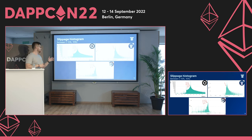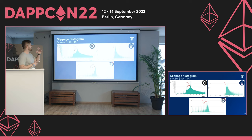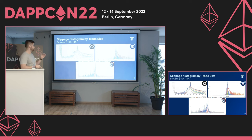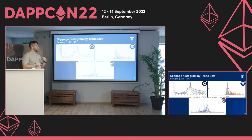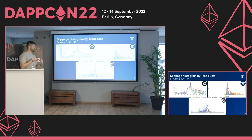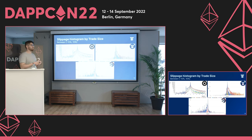Another interesting pattern emerges when categorizing slippage histogram trades by trade size. We categorized trade sizes from less than $10 up to more than $100,000 across six categories. The smaller the trade size, the more even the distribution, but as trade sizes increase, the spikes become a lot more apparent. A possible reason is that there is more to exploit from larger trades — 1% of $100K is a lot more money than 1% of $10.